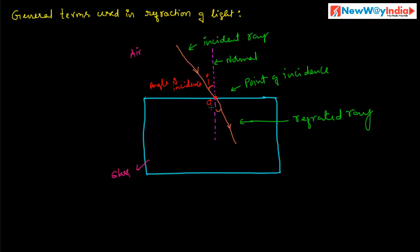The next term is the angle of refraction. The refracted ray makes an angle with the normal at the point of incidence. This angle is known as the angle of refraction, denoted by R.